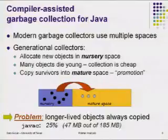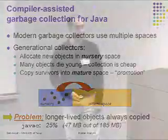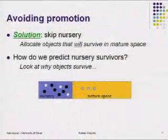What's the problem? Longer-lived objects are always copied — if we have some big data structure, we still have to funnel it through the nursery. Looking at the SPEC JVM 98 benchmarks, for example the Java C benchmark, depending on your configuration, can copy as much as 25% of its memory through the nursery — that's almost 50 megabytes out of 185 megabytes.